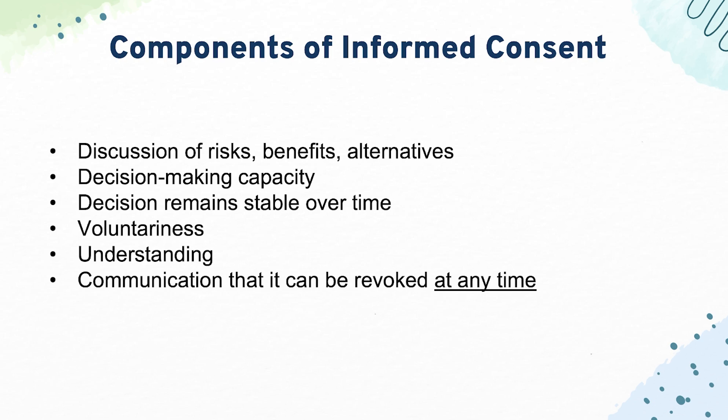The next component is voluntariness. The patient has to want the intervention themselves — they can't be pressured by any family or friends or put under any kind of duress. Questions can give an example of a patient whose wife, child, or parent is really pushing them into a certain intervention, but they don't want it. In that case, you would reason through that and say to the patient something along the lines of: it seems like this isn't what you really want — let's talk about that further.